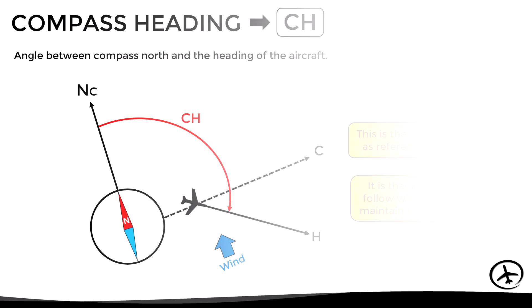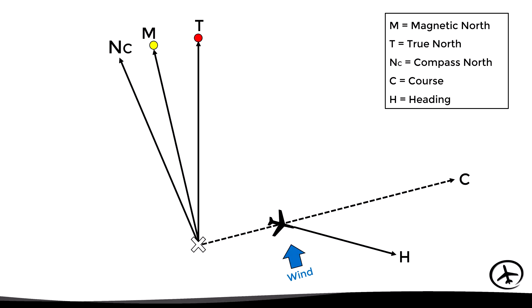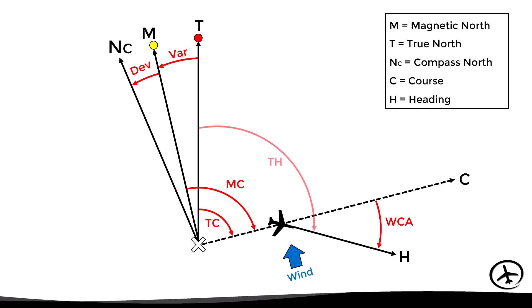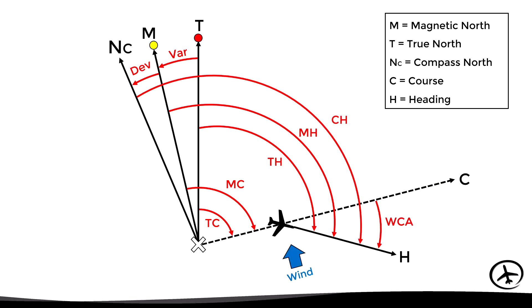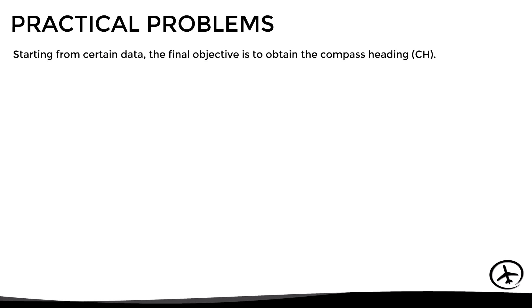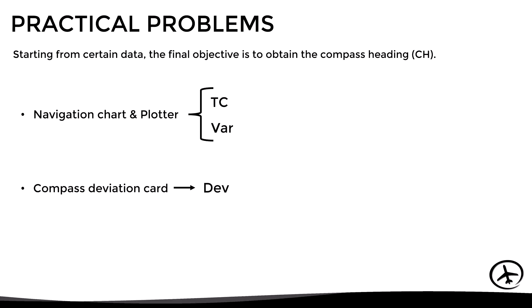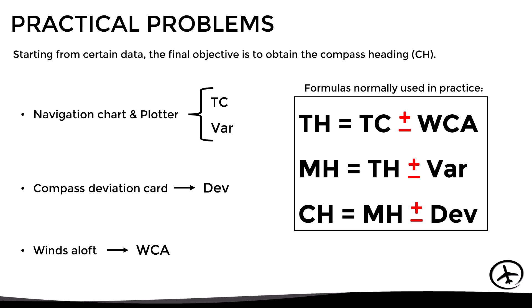Here is a summary of all the concepts: deviation angle, magnetic variation, wind correction angle, true course, magnetic course, true heading, magnetic heading, and compass heading. The final objective is to determine the compass heading. Using a navigation chart and a plotter we determine the true course and magnetic variation. Using the aircraft's compass deviation card we determine the deviation angle, and using winds aloft forecasts we calculate the wind correction angle. With this information and the relevant formulas, we can determine the compass heading.